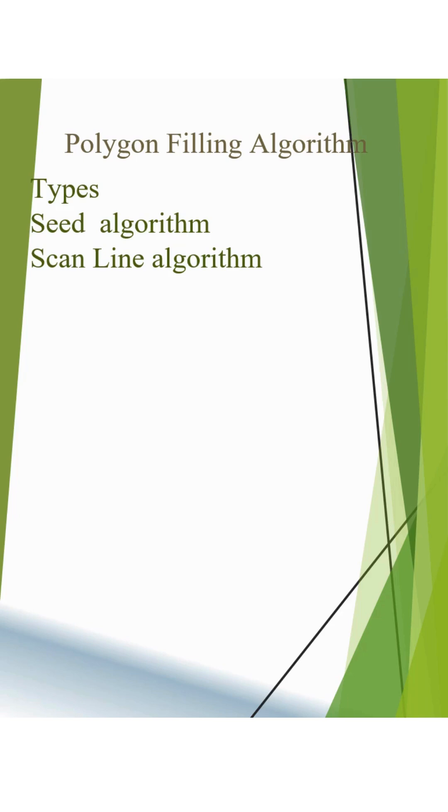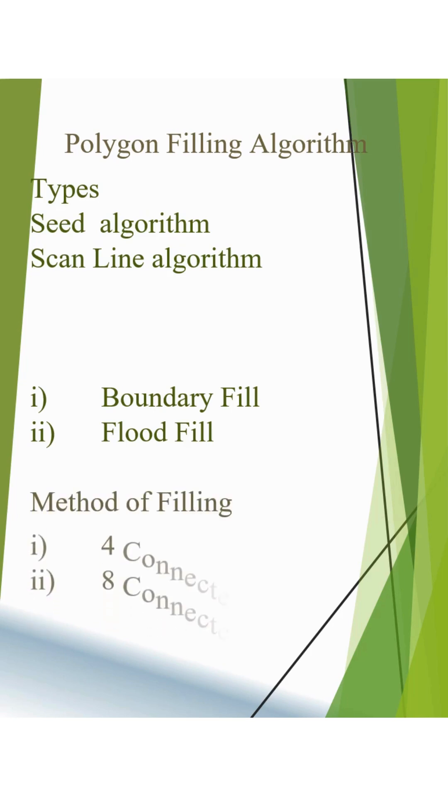The seed algorithm has two different types: boundary fill and flood fill. The methods to fill the polygon use either 4-connected or 8-connected approaches. Let me explain how polygons are filled using these methods.